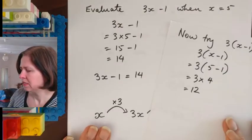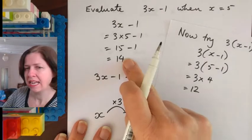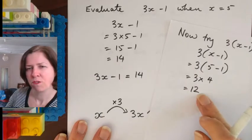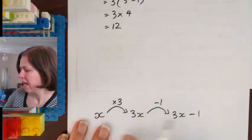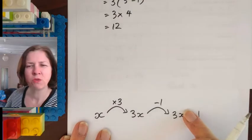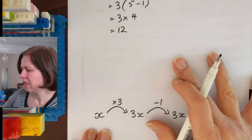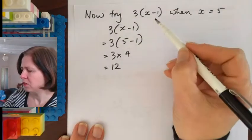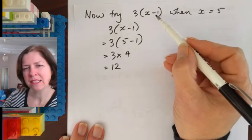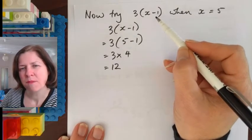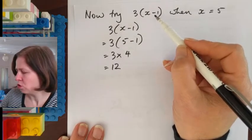So different answer. 14 here, 12 here. So let's look at my flow diagram. Okay my flow diagram here is different because I started in the brackets and because of my brackets my order of operations tells me to do the brackets first.